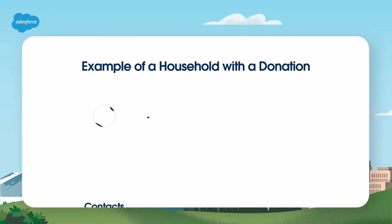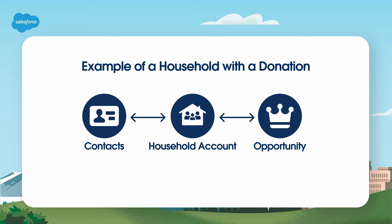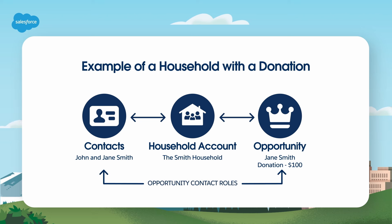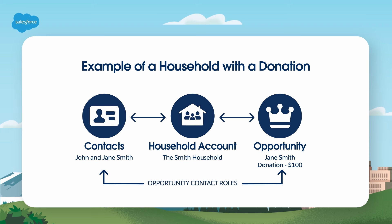Here's a basic example of a family that lives in a single household and has made a donation. The two contacts in the household are John and Jane Smith, and they belong to the Smith household account. Jane has made a $100 donation to our nonprofit, which is stored in the opportunity object. When the donation is created from the Jane Smith contact, the opportunity contact role of donor is automatically created and the donation is associated with Jane Smith's contact and Jane's household account.